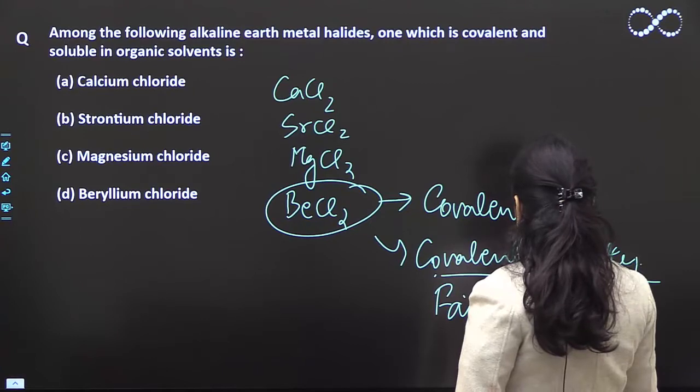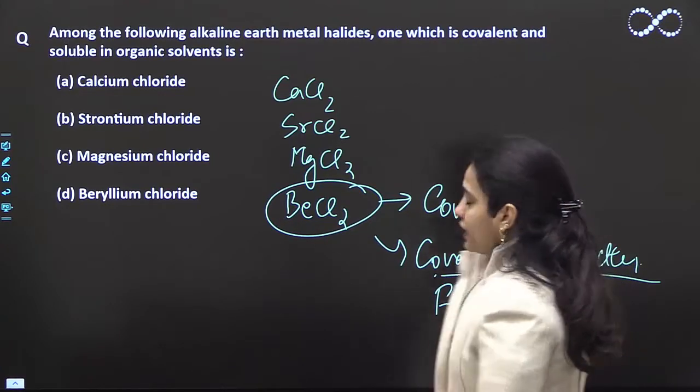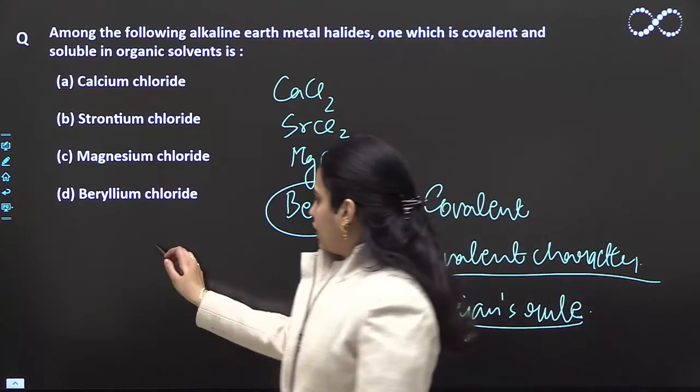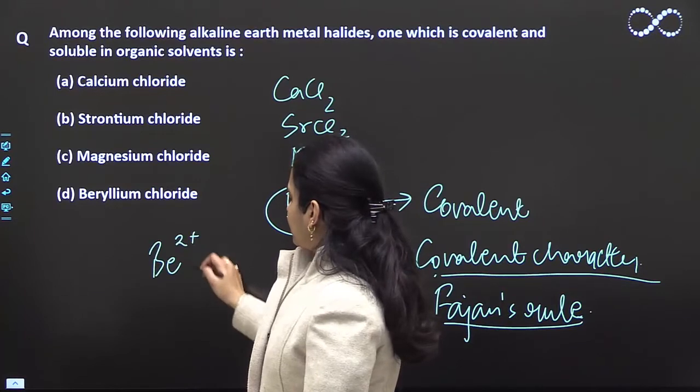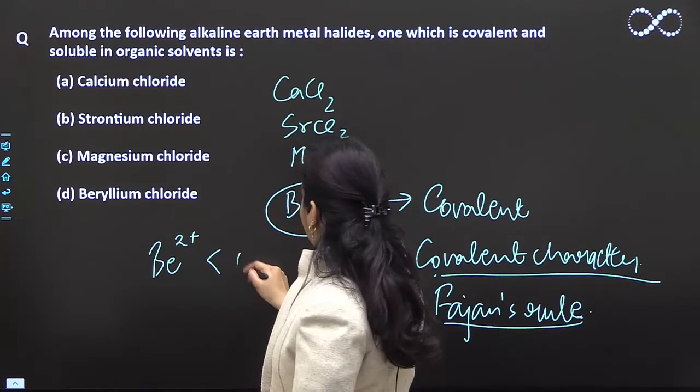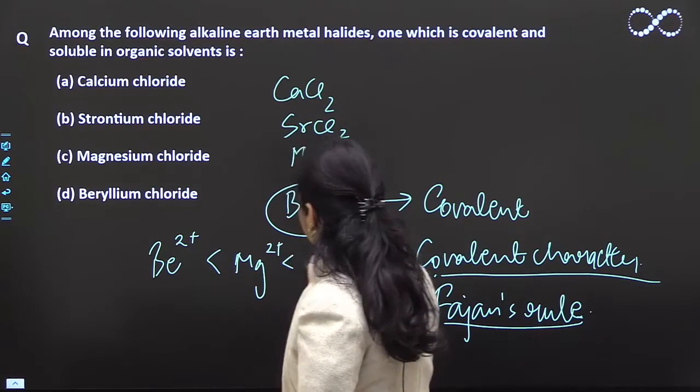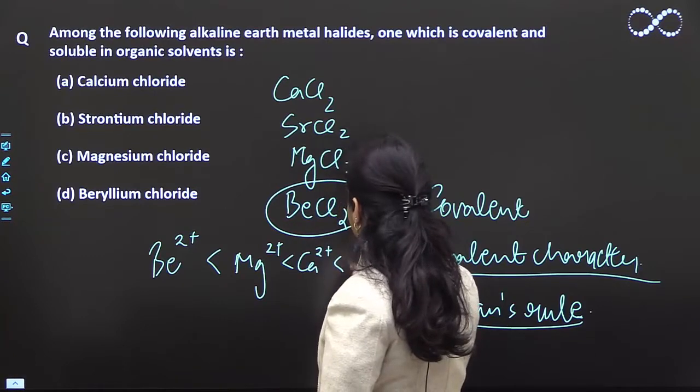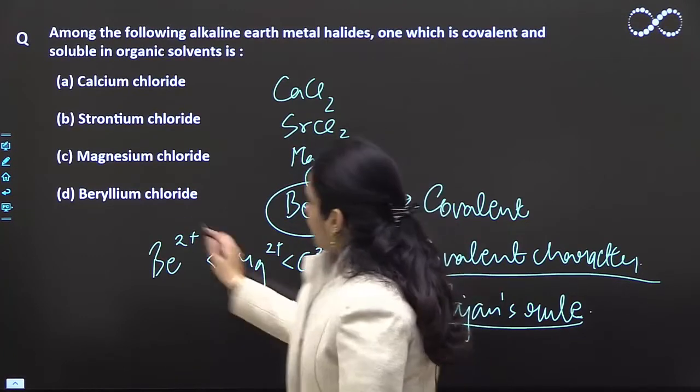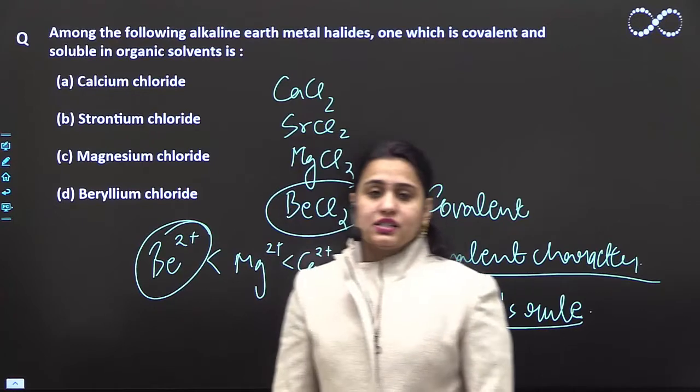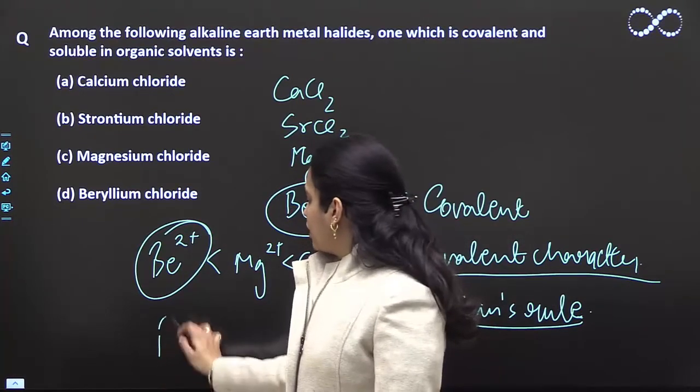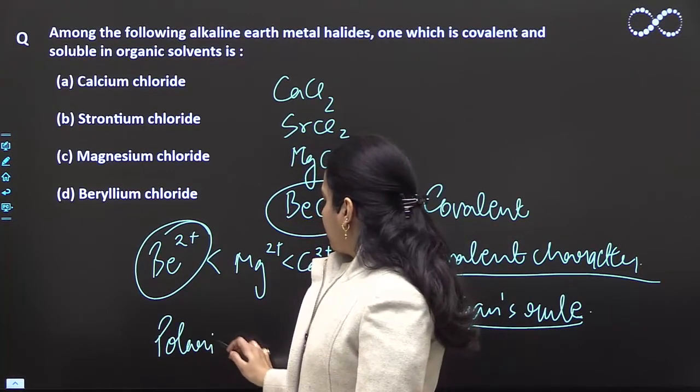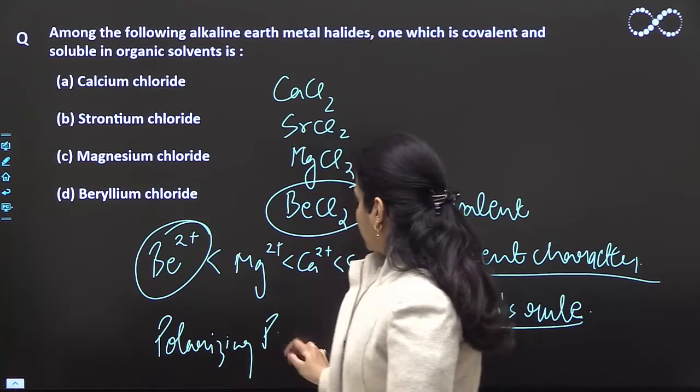According to Fajans' rule, beryllium 2+ has the smallest size - smaller than Mg2+, which is smaller than Ca2+, then Sr2+. The smaller the cation size, the greater its polarizing power.